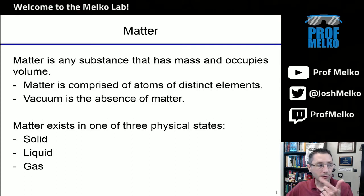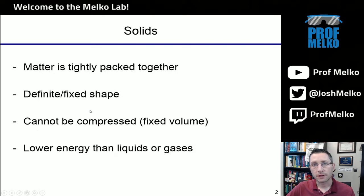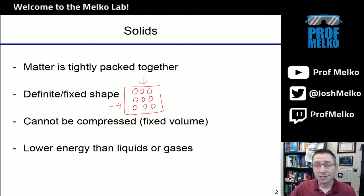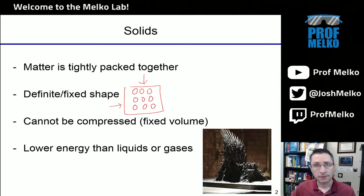Matter exists in one of three physical states: solid, liquid, and gas, and we're going to learn properties of all three. Starting with solids — something very familiar to us. In solids, the matter is very tightly packed together. Microscopically, if you zoom in, you'll see a bunch of little spheres representing the atoms, and they come in this nice, neat package design. They come in some definite fixed shape — a little cube of matter that is a solid — and if you push on it, it doesn't really compress. It's rigid, it has a fixed volume. The reason matter is organized as a solid is because it is a low energy state. The atoms have some energy, but not enough to break apart from one another and slosh around or enter the gas phase. The Iron Throne — the best solid in all of Westeros.